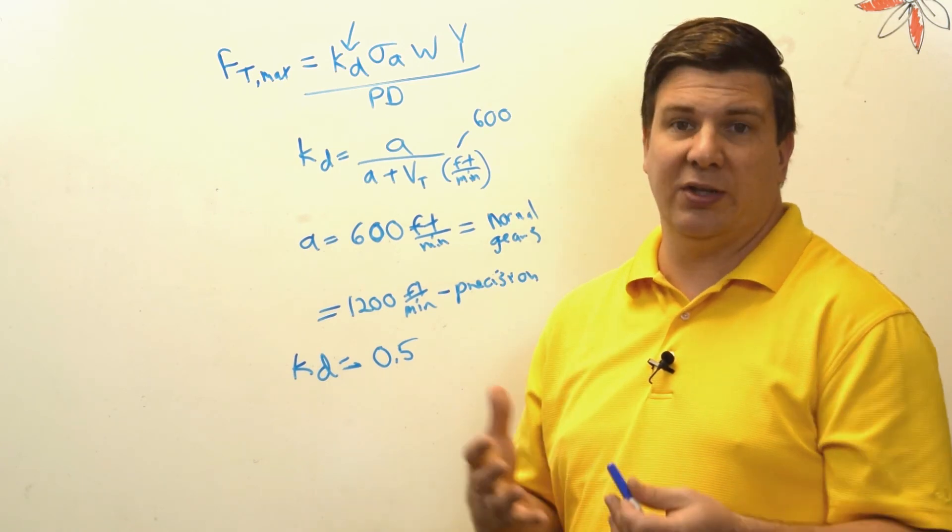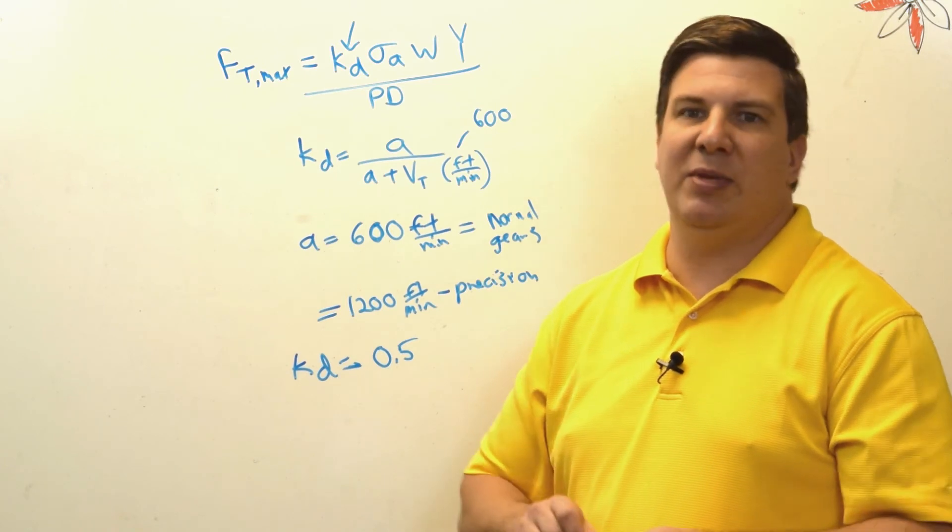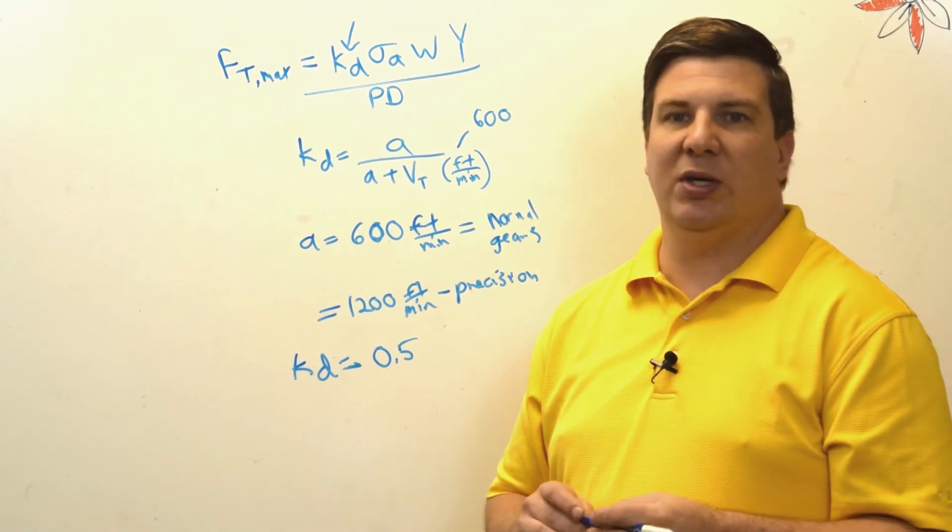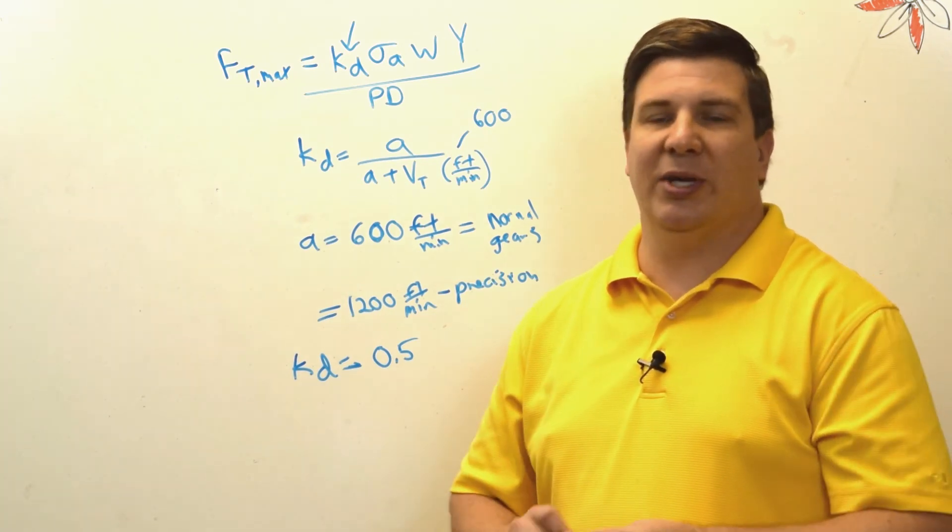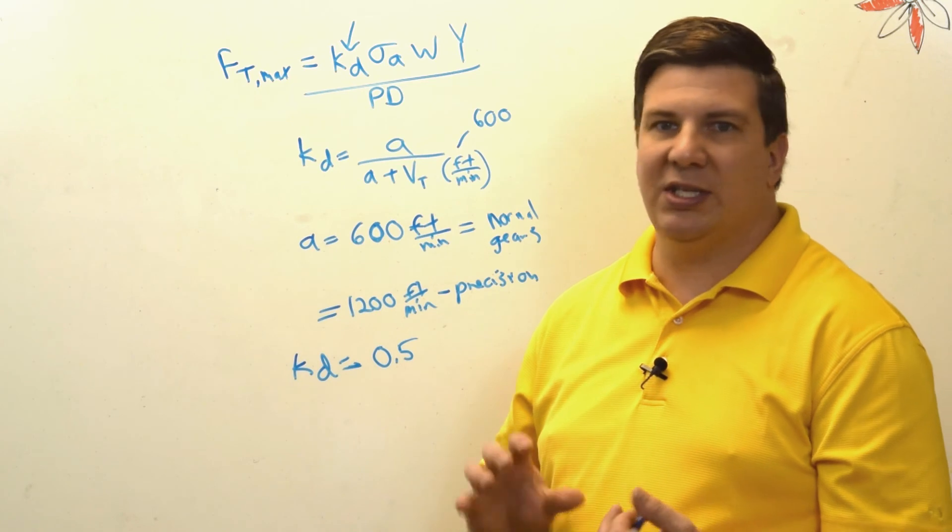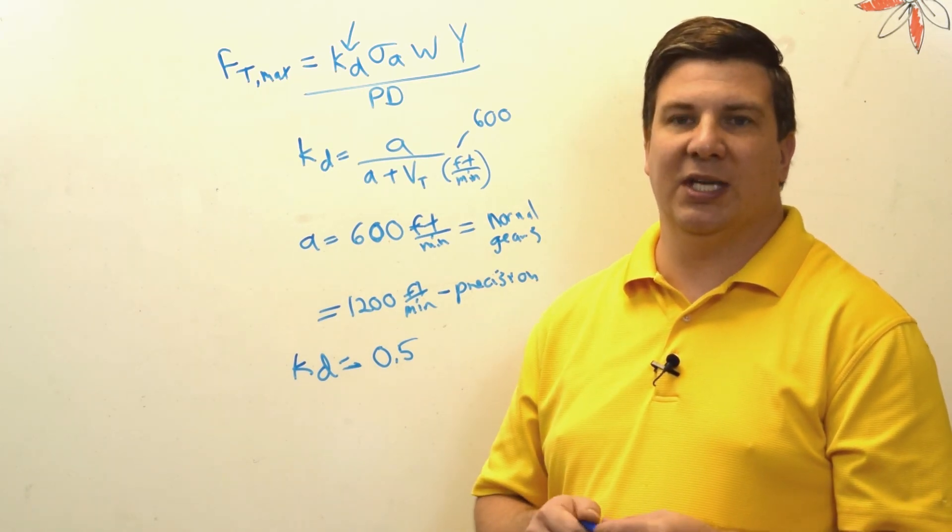So you probably want to add another design factor on top of that, and that may be somewhere between 1.5 and 2 or 3 if you're really cautious. It all depends on your application. If you have something that's hitting these teeth really hard, you're going to want to up that design factor.